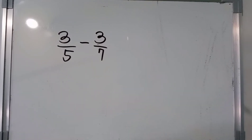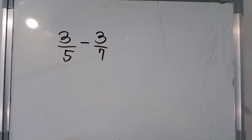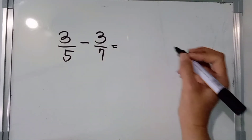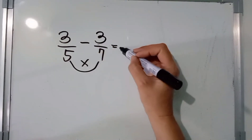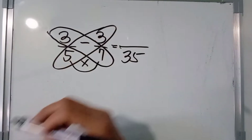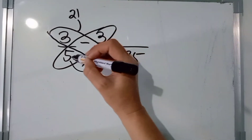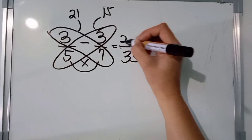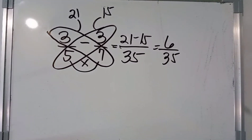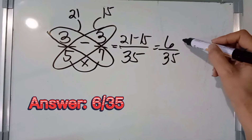Another example — we are going to subtract fractions: 3 fifths minus 3 sevenths, or 3 over 5 minus 3 over 7. Applying the butterfly method, we are going to multiply the denominators: 5 and 7. So, 5 times 7, the answer is 35. Next, multiply diagonally: 3 times 7, the answer is 21. 5 times 3, the answer is 15. So, 21 minus 15, the answer is 6 over 35. 6 over 35 is already in lowest terms, so the difference of 3 fifths and 3 sevenths is 6 over 35.